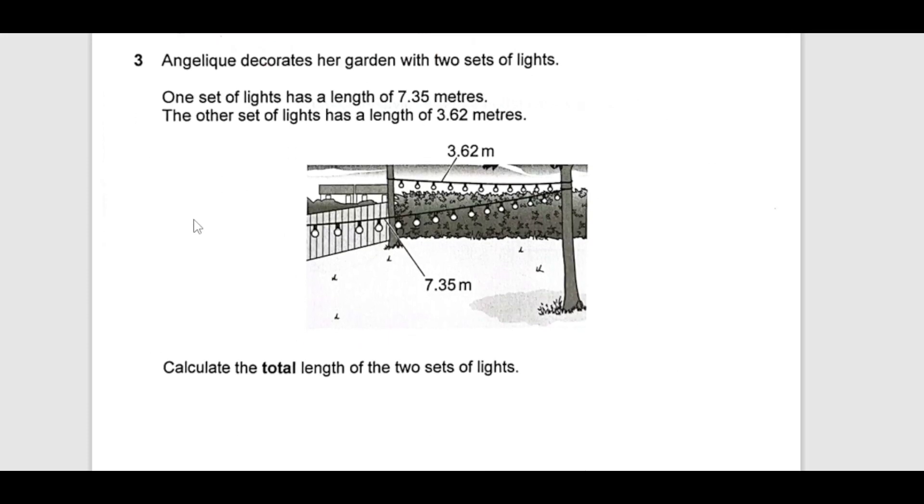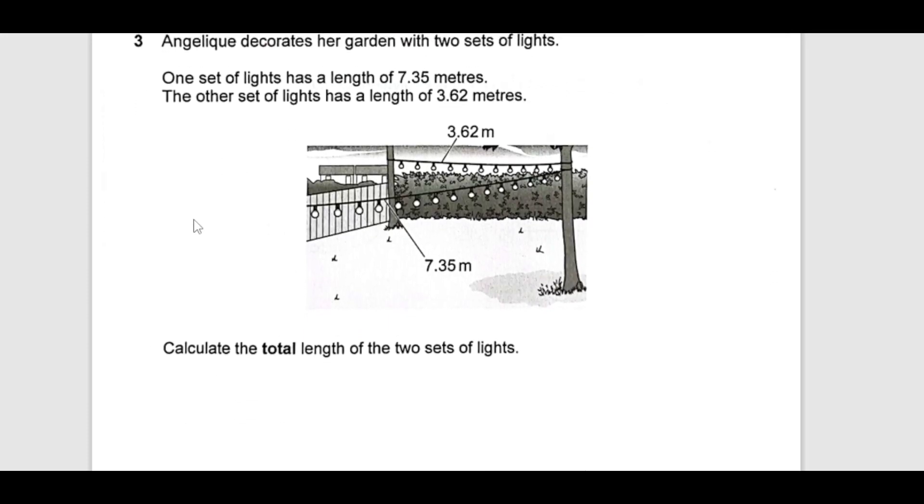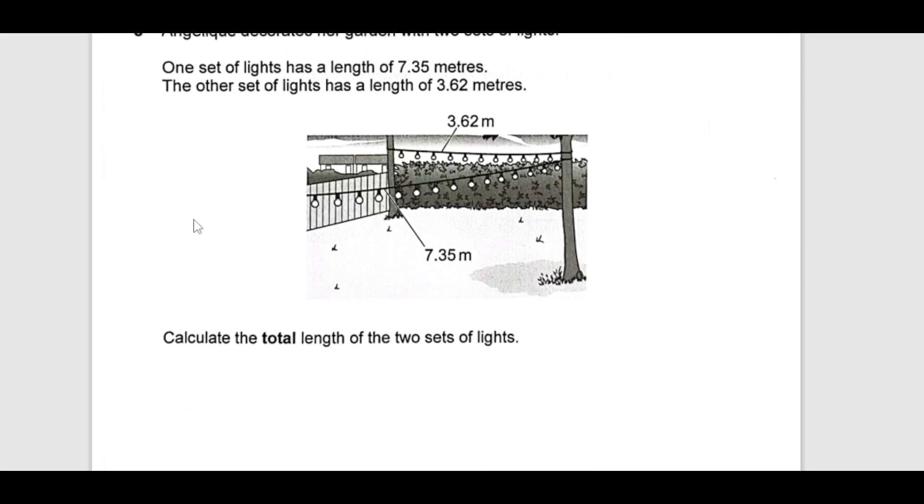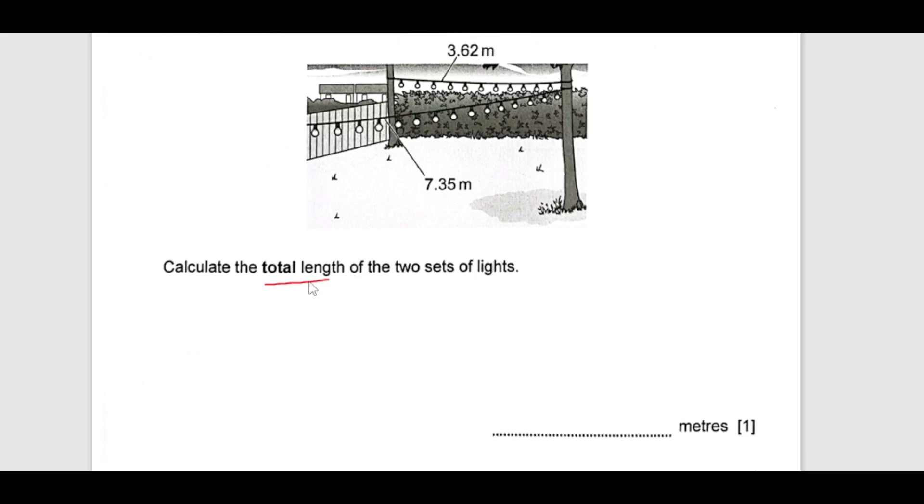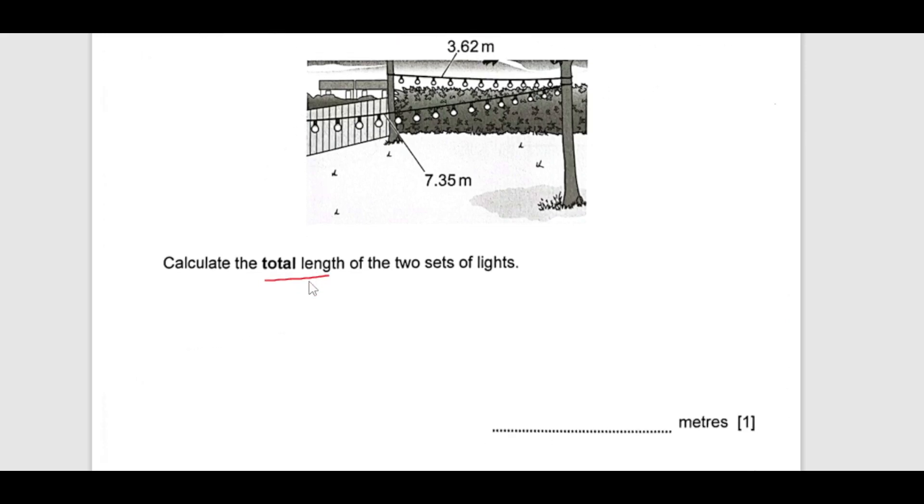Now, number 3, Angelique decorates her garden with 2 sets of light bulbs. One set of light bulbs have length of 7.35 meters. The other set has length of 3.62 meters. Calculate total length of 2 sets of light bulbs. Total length, we are just going to add nothing else here. It is 3.62 plus 7.35. 5 plus 2 is 7, 6 plus 3 is 9, 7 plus 3 is 10. This is 10.97.